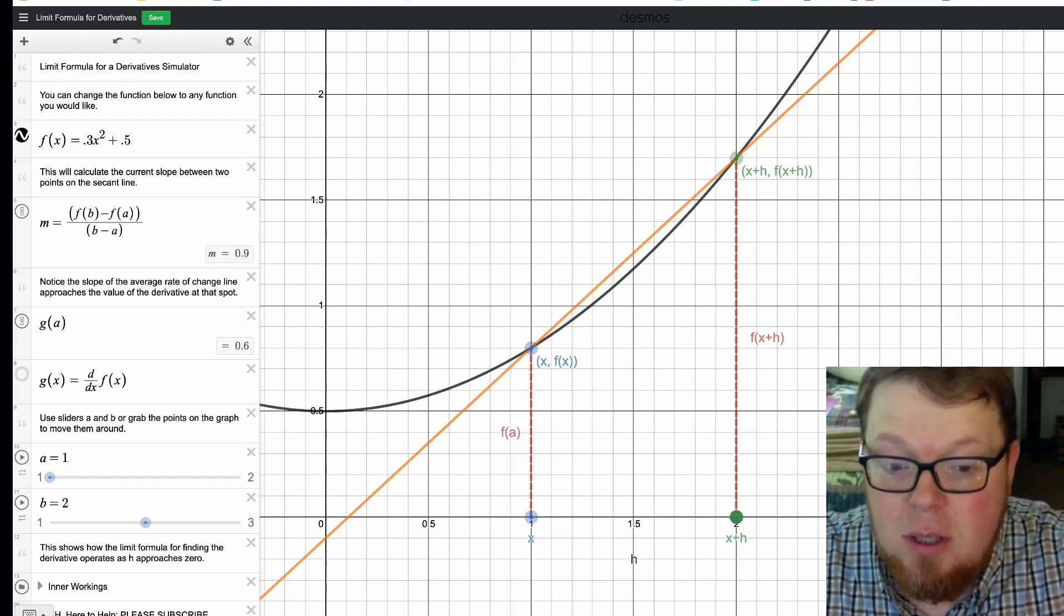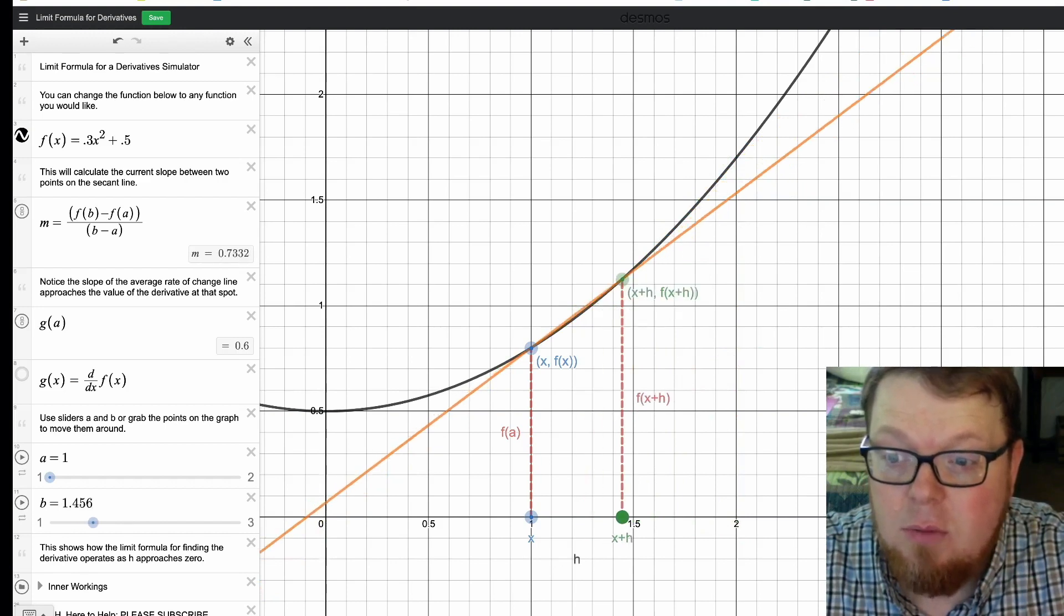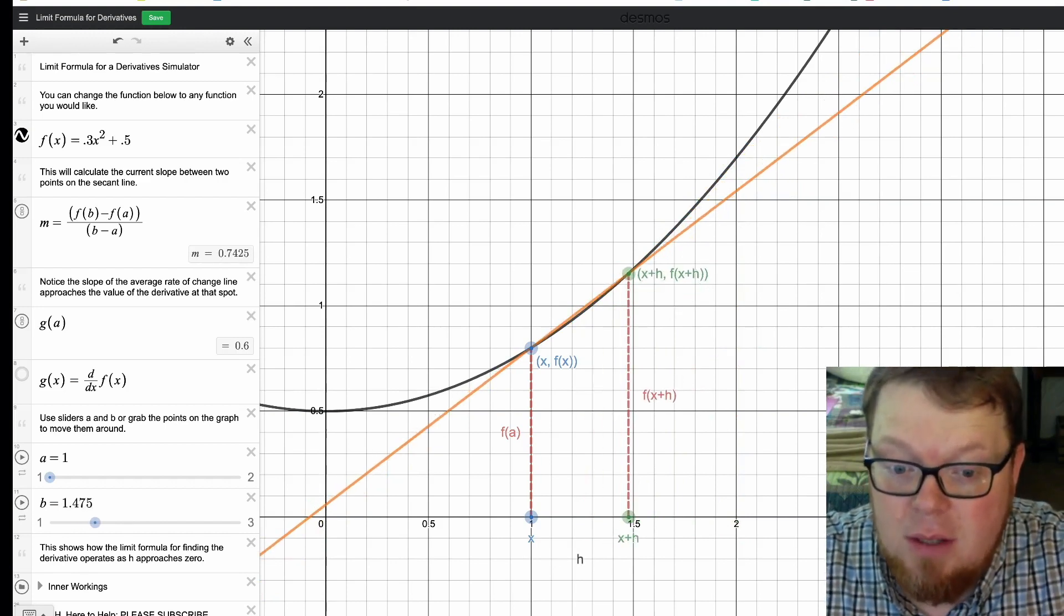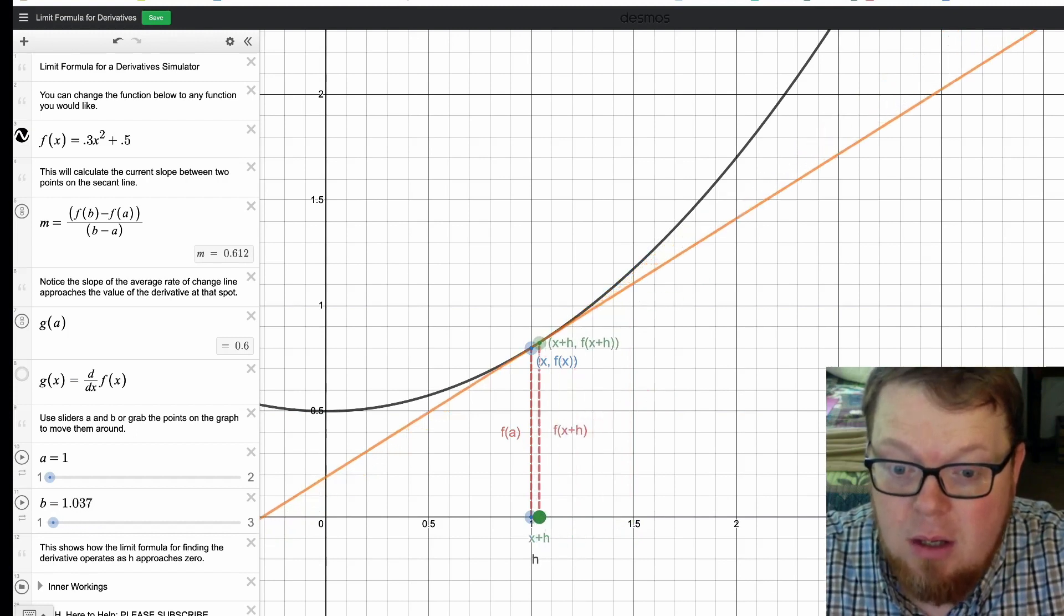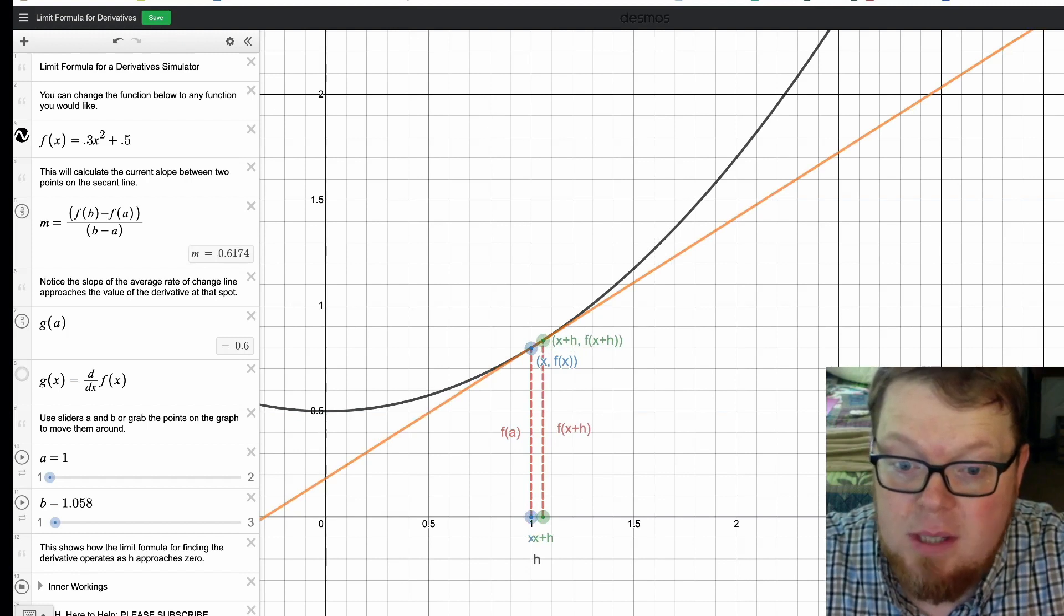So on this simulation, you can either drag the points together, and you can see over here that the value is approaching, the value of that slope is approaching the value of the derivative right at that point, which we see below to be 0.6.